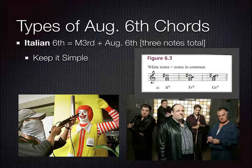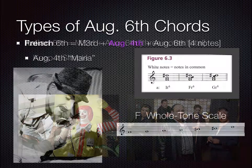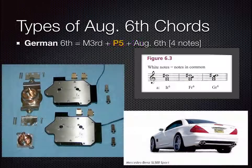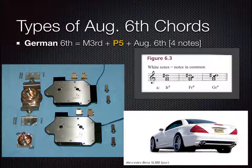The stereotype that Italians like to keep things simple will remind you that the Italian six has only three notes. The French pride themselves on being great lovers — the French six includes the augmented fourth, which is the opening interval of the love song 'Maria' from West Side Story. It is also called a French six because all the notes are from the whole tone scale, widely used by Debussy and other French composers. The Germans have a reputation for insisting on perfection — the German six includes a perfect fifth above the bass.